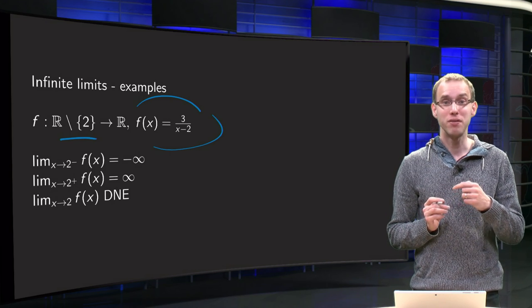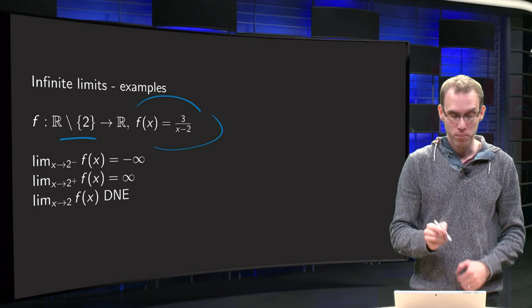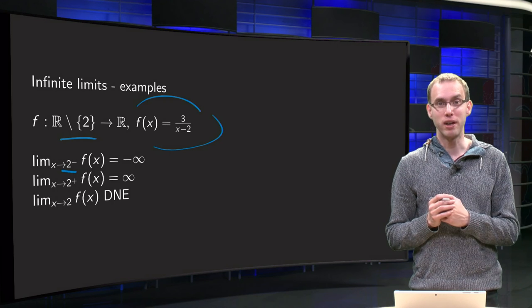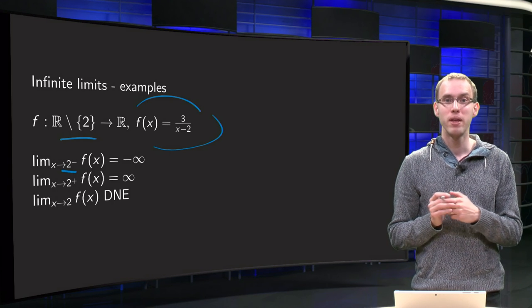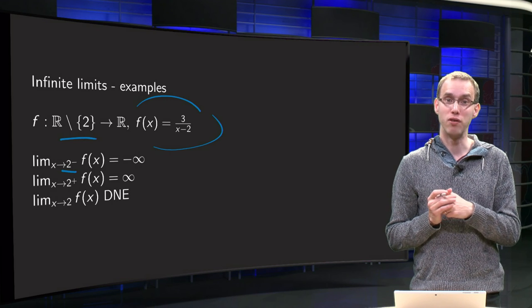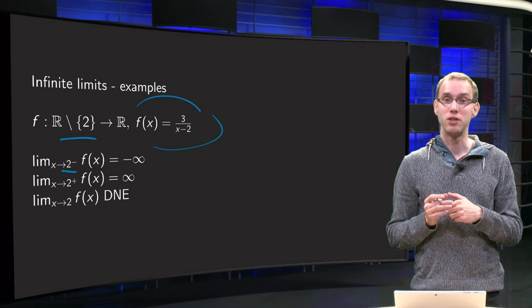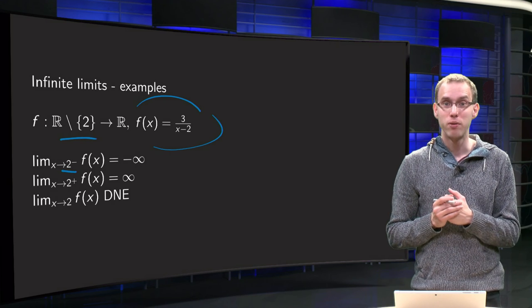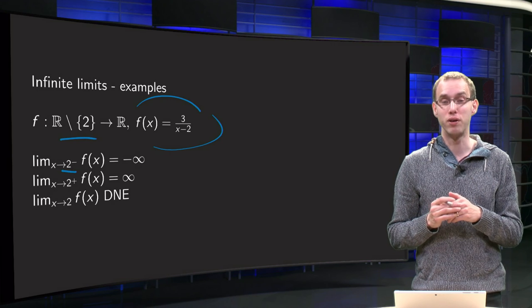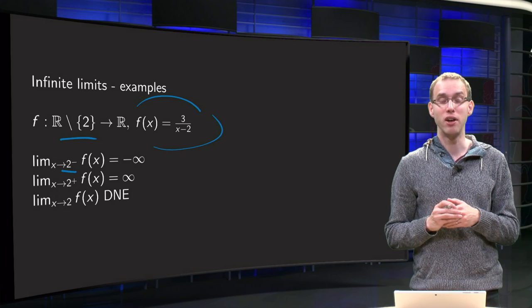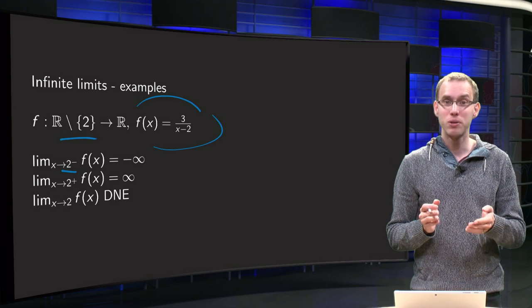So what happens if you approach 2 from below, the limit x to 2 minus. If you plug in 1.9 for example, you get 3 over 1.9 minus 2 equals 3 over minus 0.1, so that will be minus 30. If you plug in 1.99, you get 3 over minus 0.01, so that will be minus 300. I already see what is going to happen.